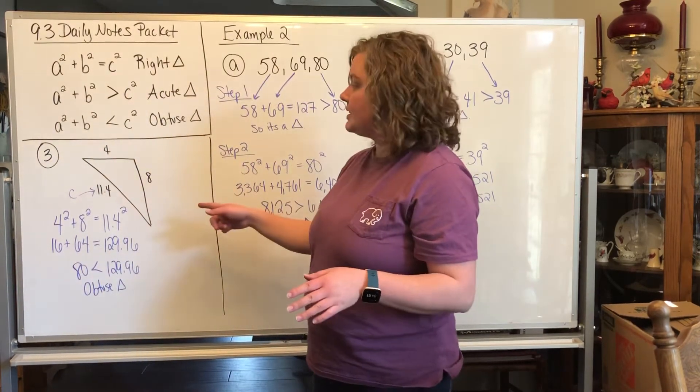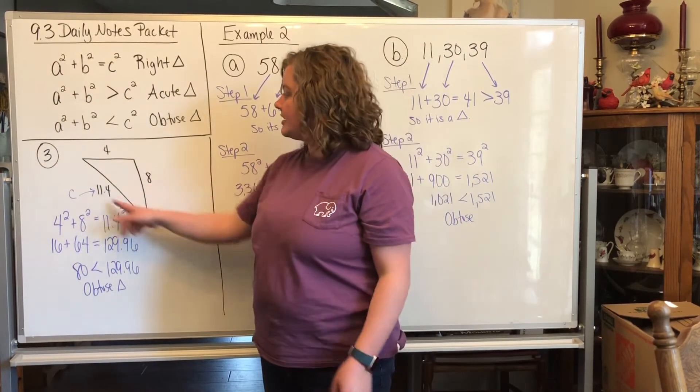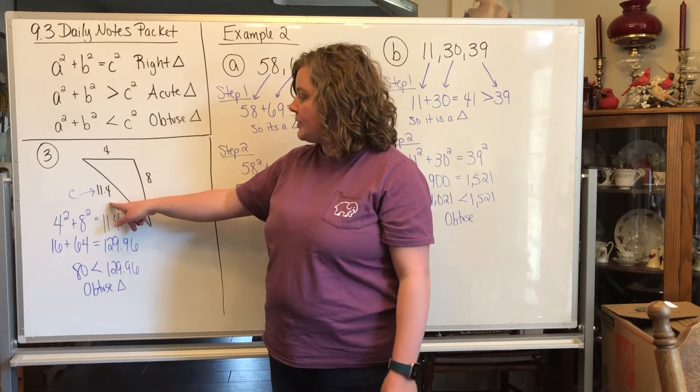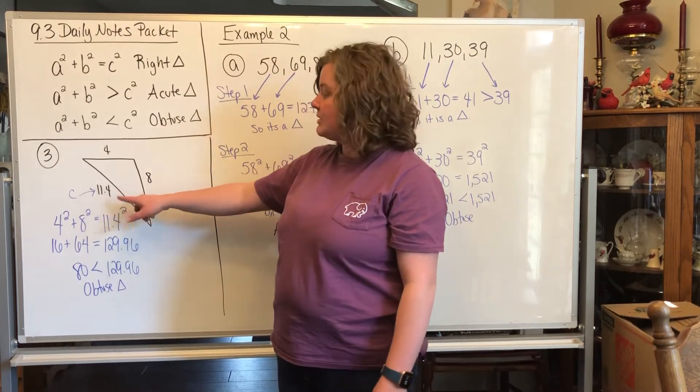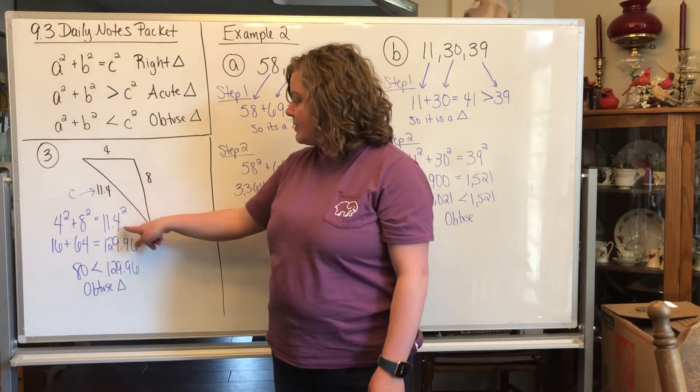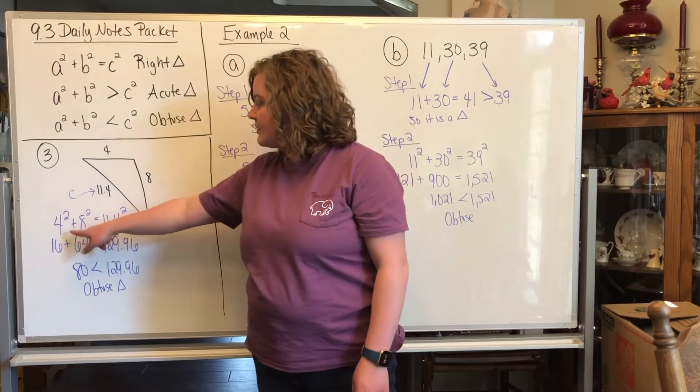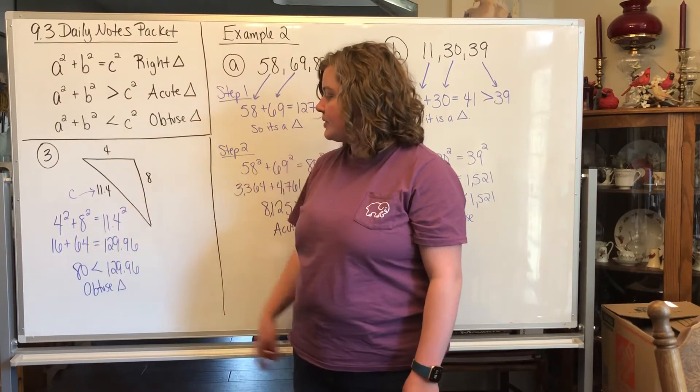Okay, so number 3 on page 2 has this triangle: 4, 8, and 11.4. So 11.4 is going to be your C, so you put that over here, and you're going to do 4 squared plus 8 squared equals 11.4 squared.